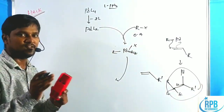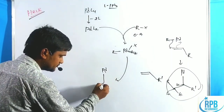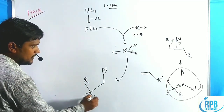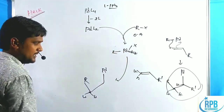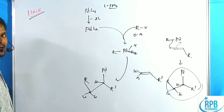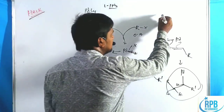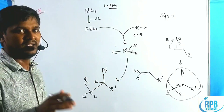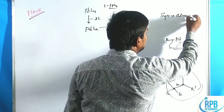A sawhorse projection of this complex shows palladium, the R group, R' group, and hydrogen atoms. The Heck coupling reaction requires syn dehydropalladation — syn elimination — where hydrogen and palladium must be in the same plane (syn periplanar). If syn periplanar geometry is not present in the complex, it must rearrange.